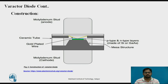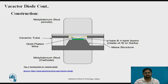In the construction of the Varactor Diode, it is a PN junction diode. If the semiconductor material used is silicon, it is limited to lower frequencies. But for microwave frequencies, gallium arsenide is used, as the mobility of holes and electrons is greater compared to silicon. So for high frequency applications, gallium arsenide is used.